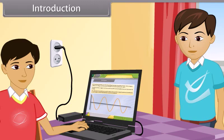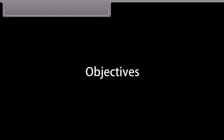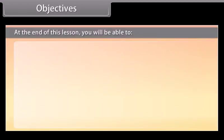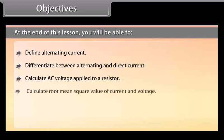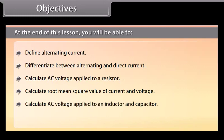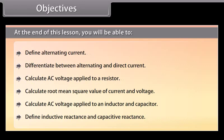Children, today we will study about alternating current. At the end of this lesson, you will be able to: define alternating current; differentiate between alternating and direct current; calculate AC voltage applied to a resistor; calculate root mean square value of current and voltage; calculate AC voltage applied to an inductor and capacitor; and define inductive reactance and capacitative reactance.